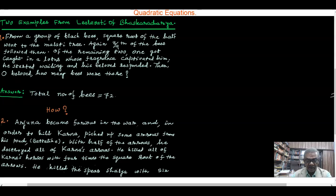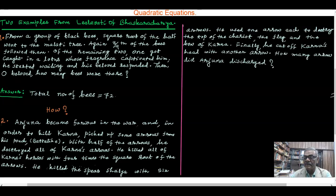He killed the Sarathi Salya, who is the charioteer of Karna, with six arrows. And he used one arrow each to destroy the top of the chariot, the flag, and the bow of Karna. Finally he cut off Karna's head with another arrow. How many arrows did Arjuna discharge? The question he asked.